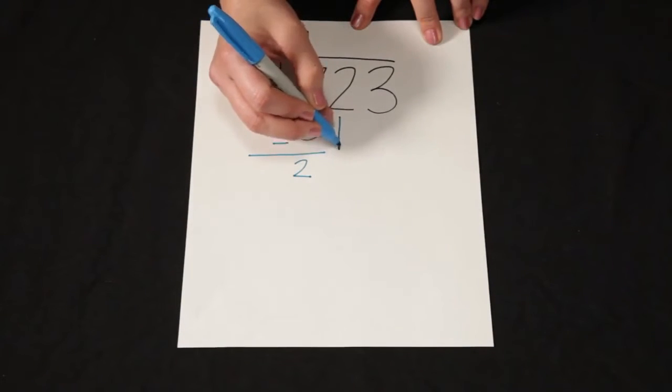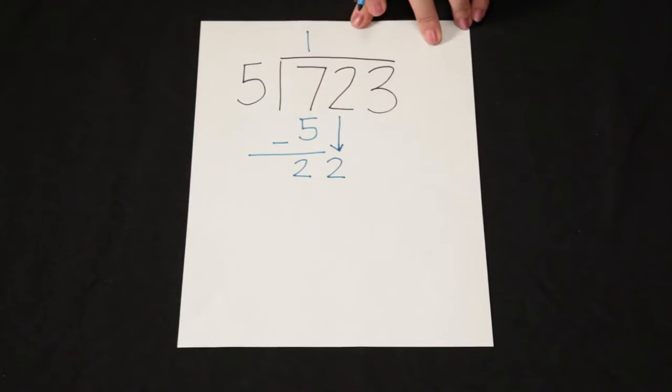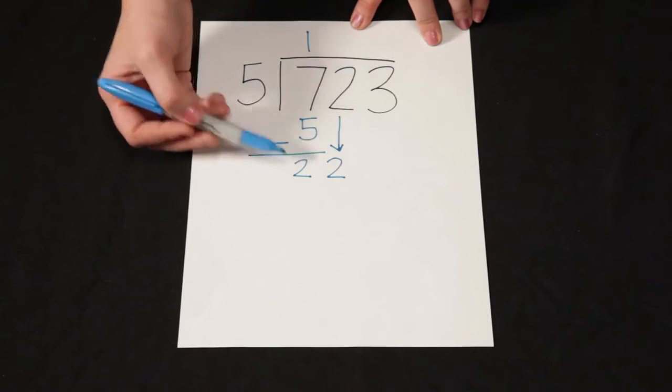Now I'm going to bring down the two tens. I'll use my arrow to actually show the action of bringing down. And now I'm going to ask myself, how many groups of 5 can I make with 22?